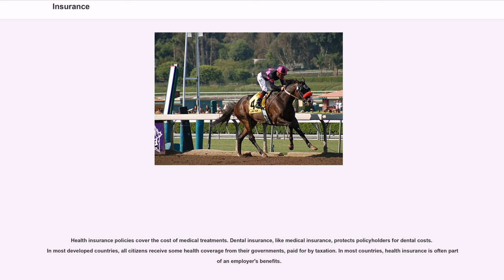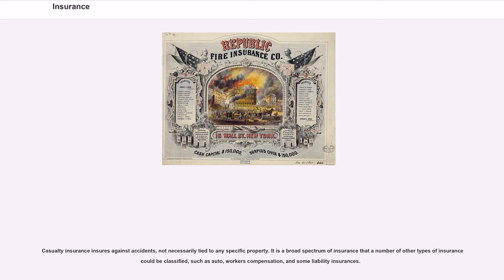Health insurance policies cover the cost of medical treatments. Dental insurance, like medical insurance, protects policyholders for dental costs. In most developed countries, all citizens receive some health coverage from their governments, paid for by taxation. In most countries, health insurance is often brought through an employer's benefits. Casualty insurance insures against accidents, not necessarily tied to any specific property. It is a broad spectrum of insurance that a number of other types of insurance could be classified under, such as auto, workers' compensation, and some liability insurances.